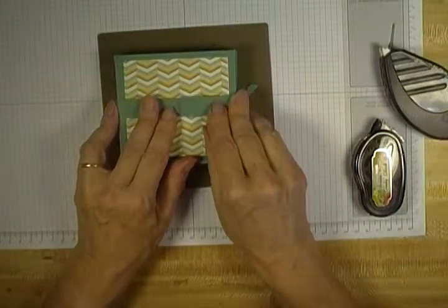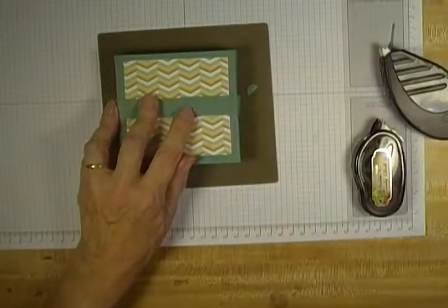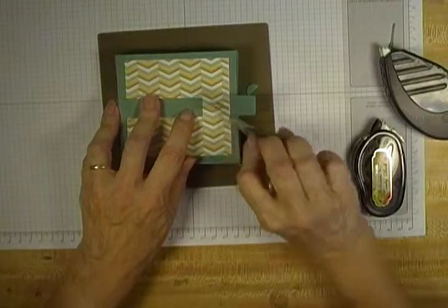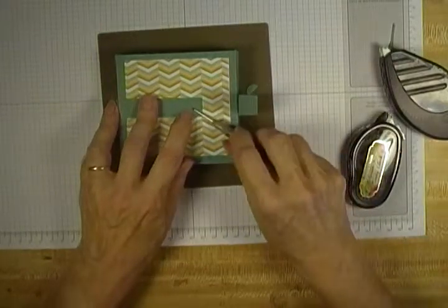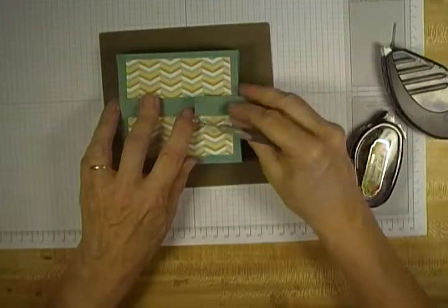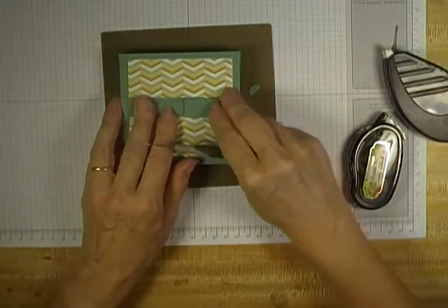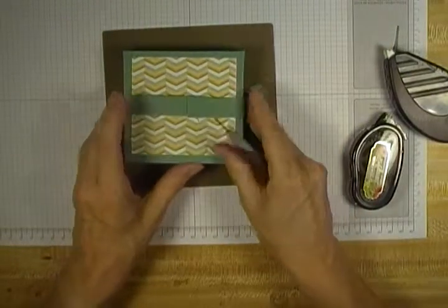And I'm just folding it around my box and I'm going to join it at the front with a glue dot. There we go. Match up the two ends. Perfect.